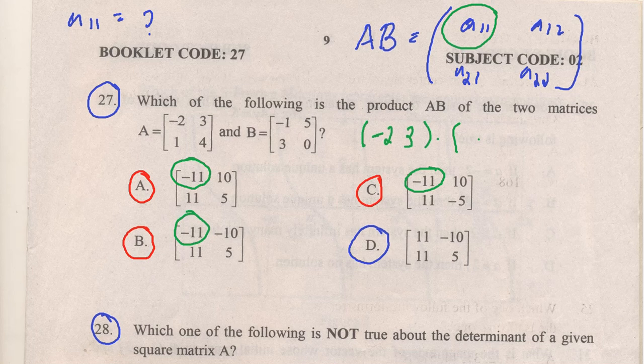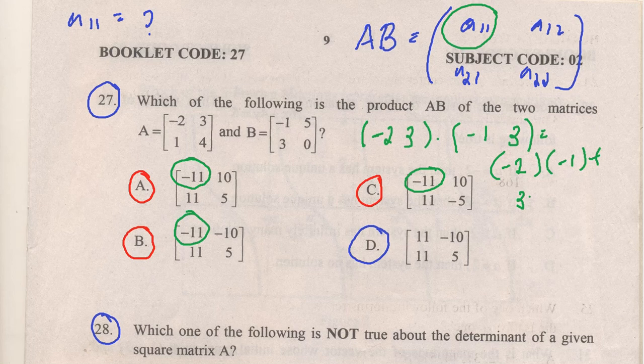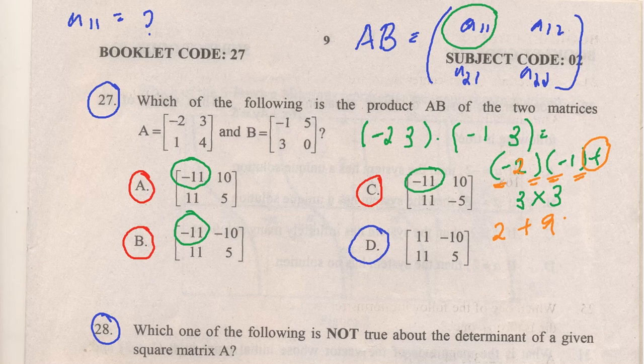Now let's discuss properties of determinants. The first row of A is minus 2, 3 dot product with the first column of B which is minus 1, 3. Because of these negative values, minus times minus will be positive: 2 times 1 is 2, plus 3 times 3 is 9, therefore you get positive 11.